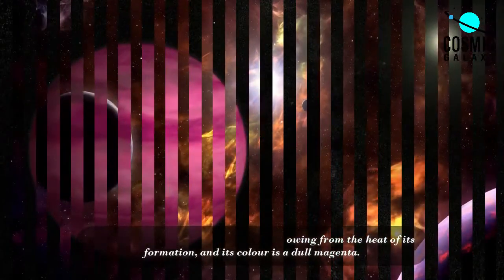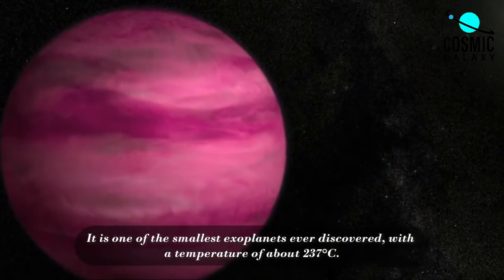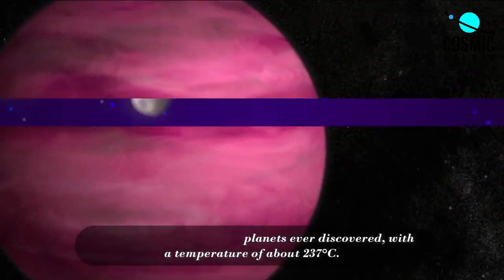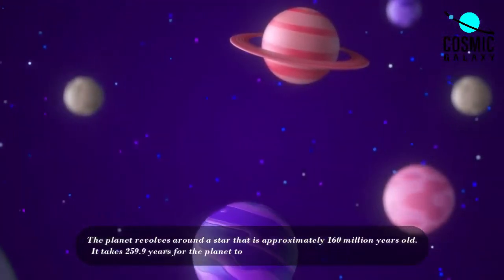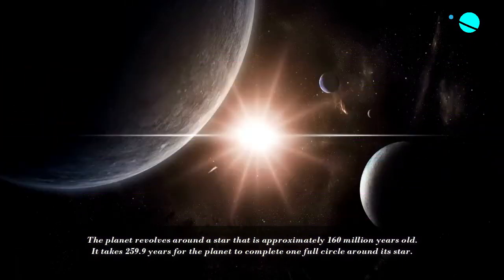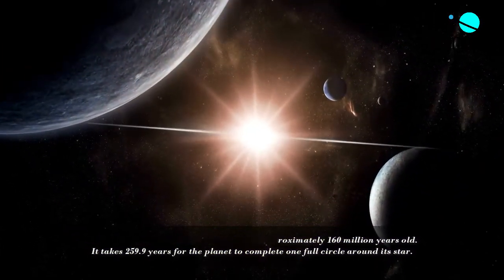It is one of the smallest exoplanets ever discovered with a temperature of about 237 degrees Celsius. The planet revolves around a star that is approximately 160 million years old. It takes 259.9 days for the planet to complete one full circle around its star.